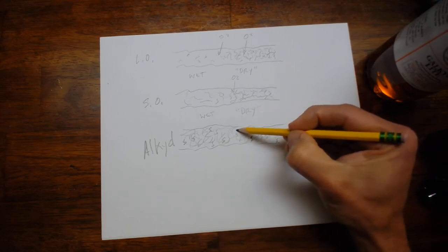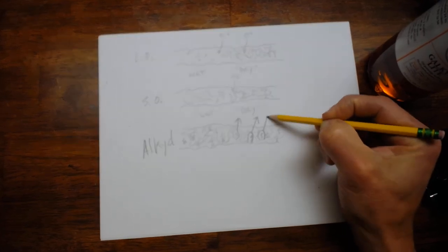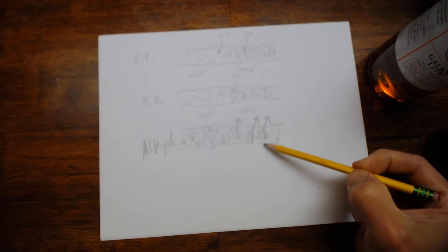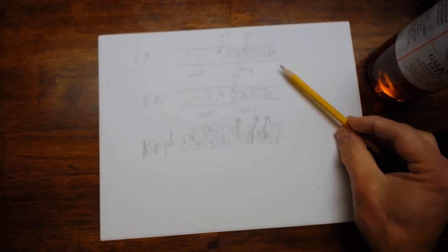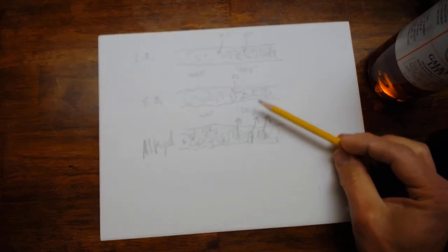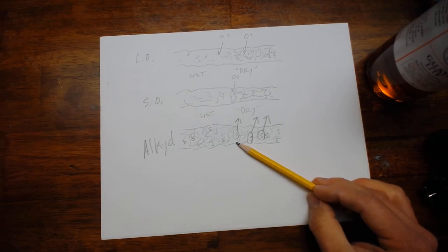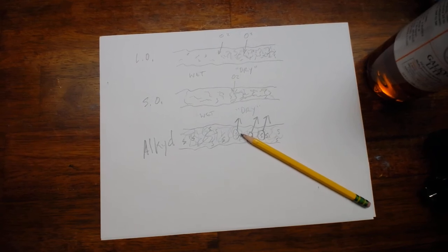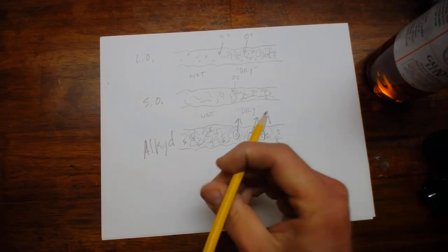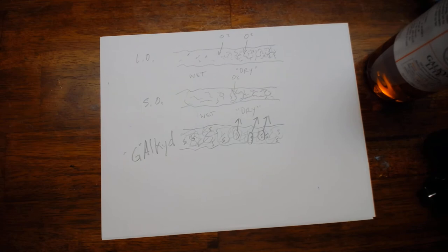Alkyd mediums such as galkid light dry by the evaporation of the solvent. The evaporation of solvent is a much faster drying mechanism than the oxidation of oil, which is why alkyd mediums dry so quickly. So what Gamblin did with their alkyd mediums is simply take that word and added a G for Gamblin and that's their branded line of alkyd resin mediums.